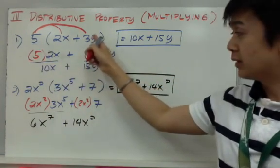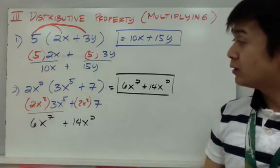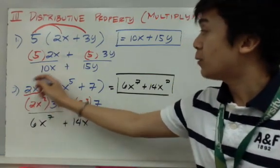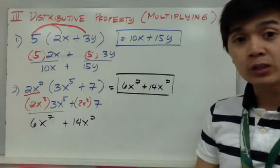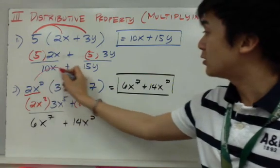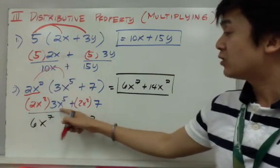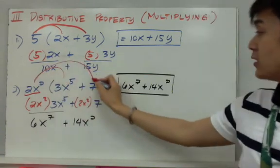Let's do the second example. On the second example, my monomial has an exponent, so you need to use the law of exponents when multiplying. If I distribute 2x² to 3x⁵, it's 2x² × 3x⁵, and 2x² to 7, which gives me 2x² × 7.